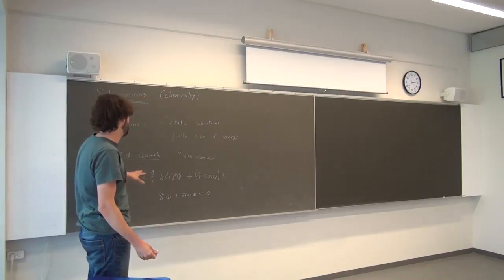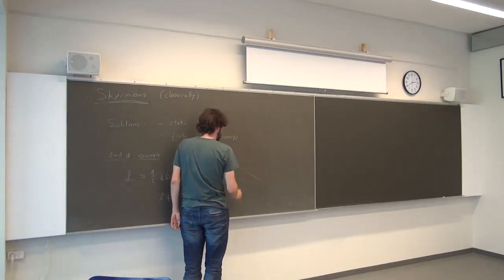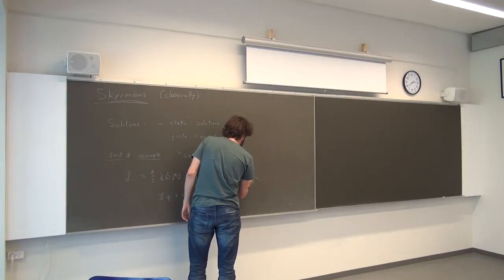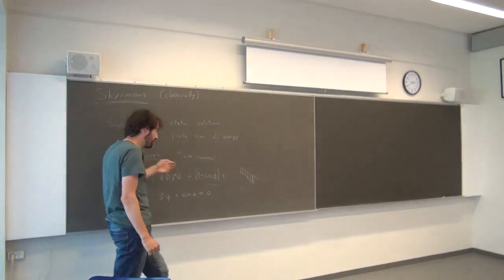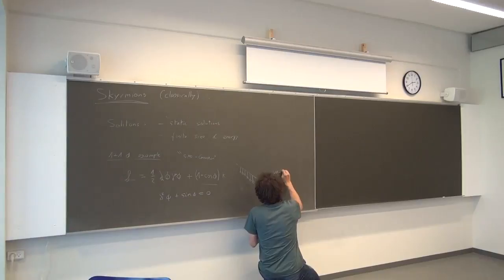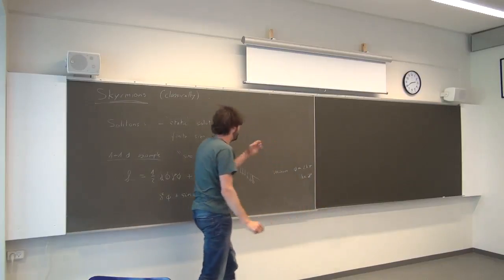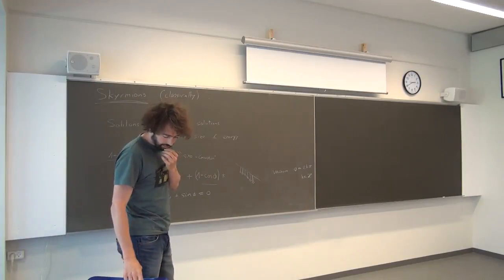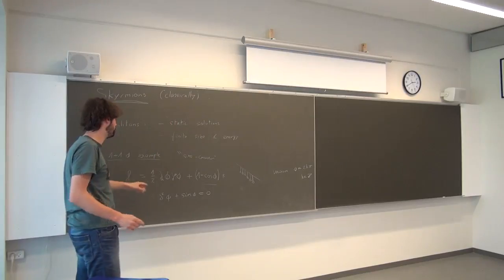This model is probably something you've seen before, because this is just the potential of a pendulum. Basically, you can picture it as a set of angular pendulums on a line — the continuum limit of a set of coupled pendulums. The vacuum in this case is just anything that minimizes the potential: phi equal to 2k pi, where k is an integer. So there are an infinite set of vacua in this model. There is also a global symmetry — you can shift phi by any multiple of 2 pi, so the true vacuum is phi equal to zero.